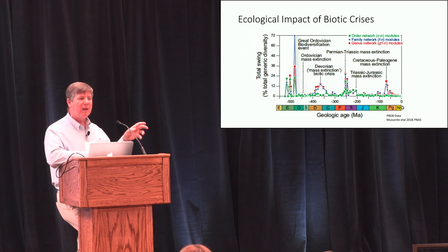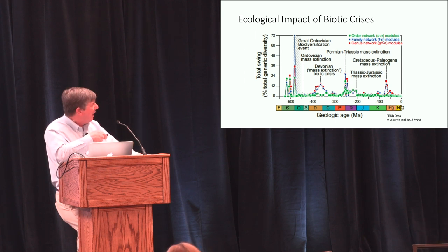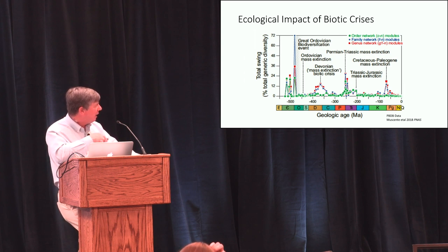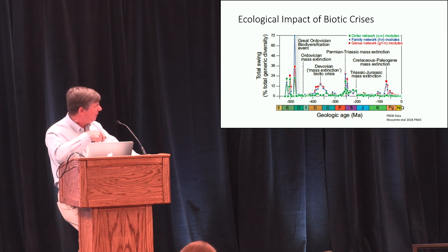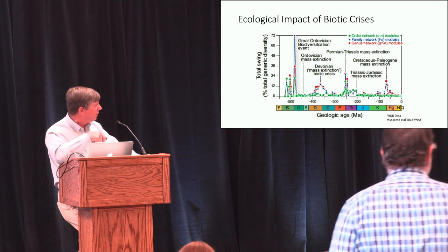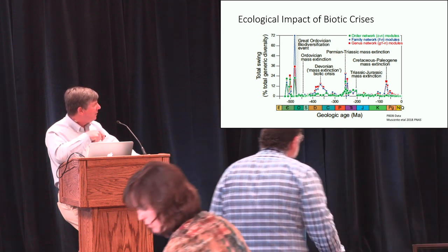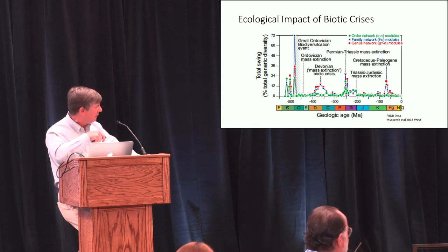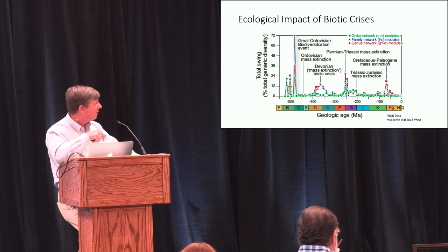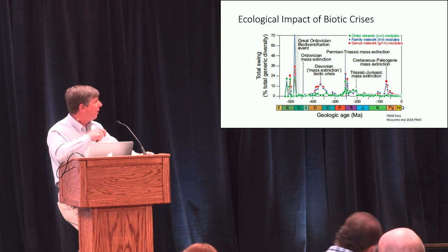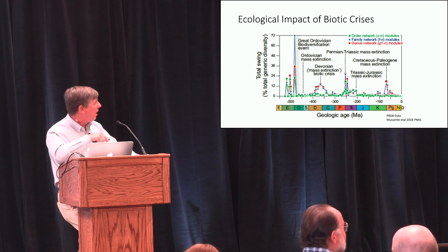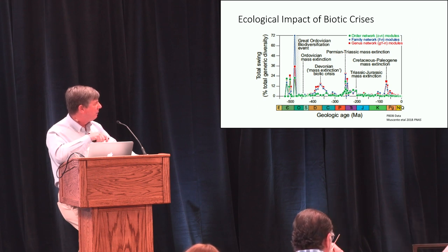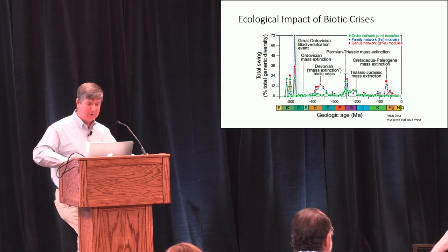This was an attempt to look at ecological structures and how they were affected during these events. The peaks in this diagram, going from 600 million years ago up to today, show a couple of very large increases in different analyses of the network structure. This suggests that the Ordovician biodiversification — one of the largest swings in diversity — along with the Ordovician mass extinction and then the Permo-Triassic mass extinction 251 million years ago are the standout events.